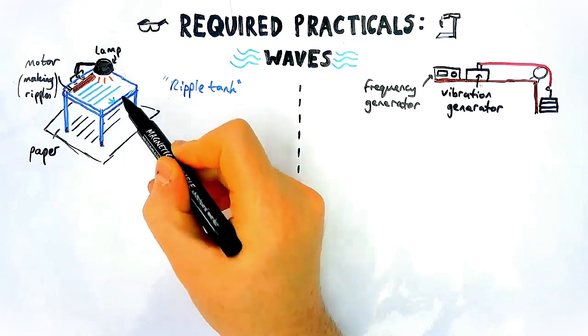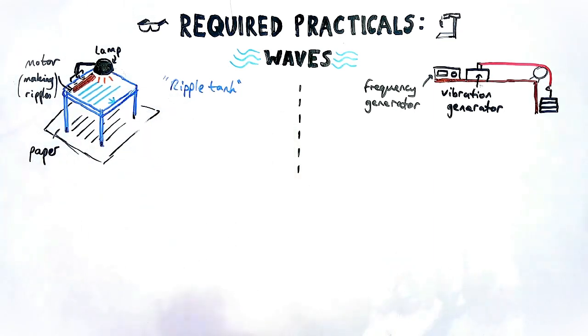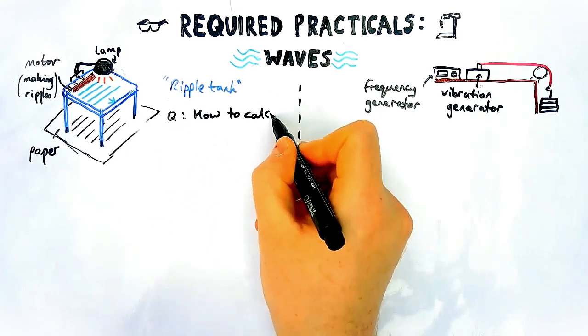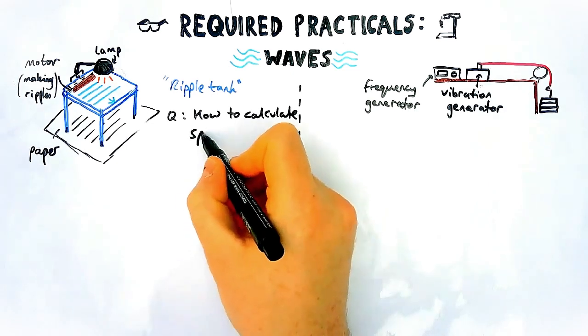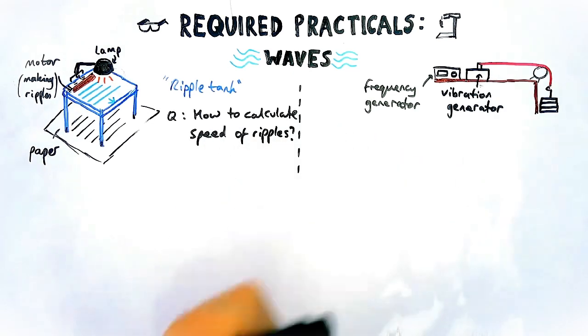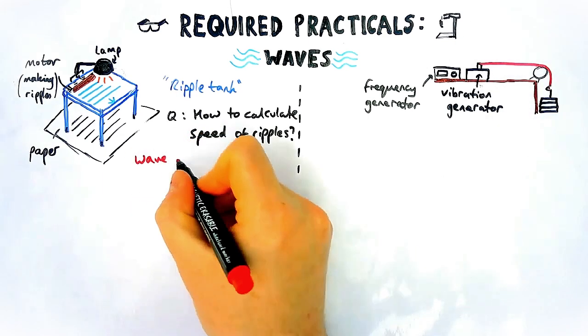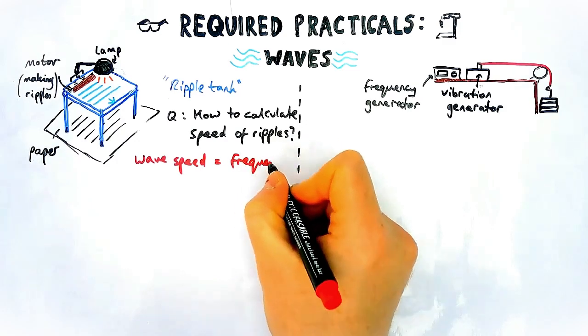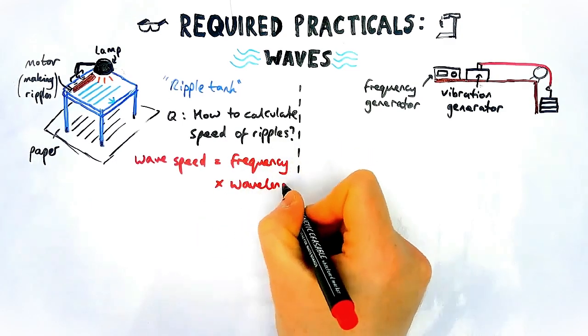What we're going to measure about these waves is a couple of things. You might see a question commonly asked: how do you calculate the speed of the water waves in the ripple tank? The absolute essence of this question is knowing how to use the equation wave speed equals frequency times wavelength, knowing what frequency is, what wavelength is, and how you can measure them in this instance. Let's deal with each of those things one at a time.